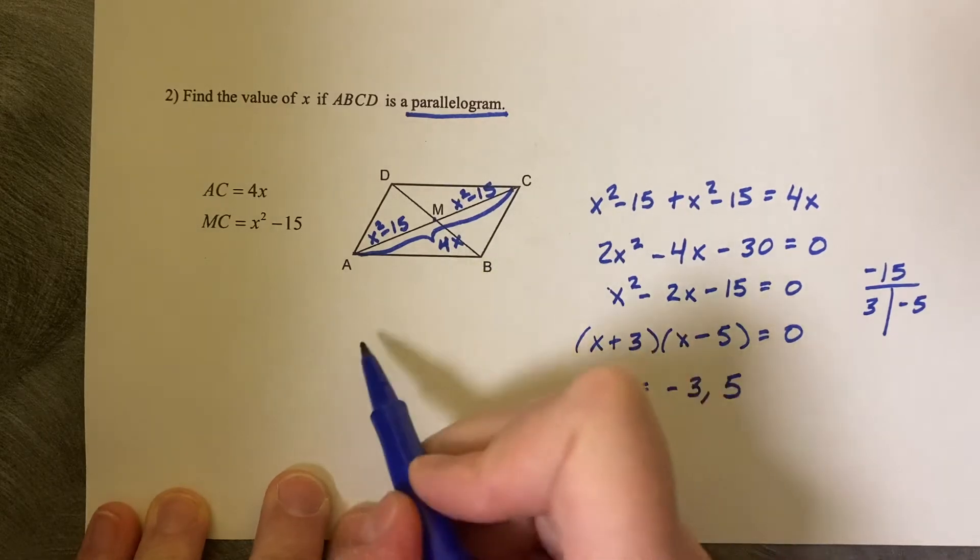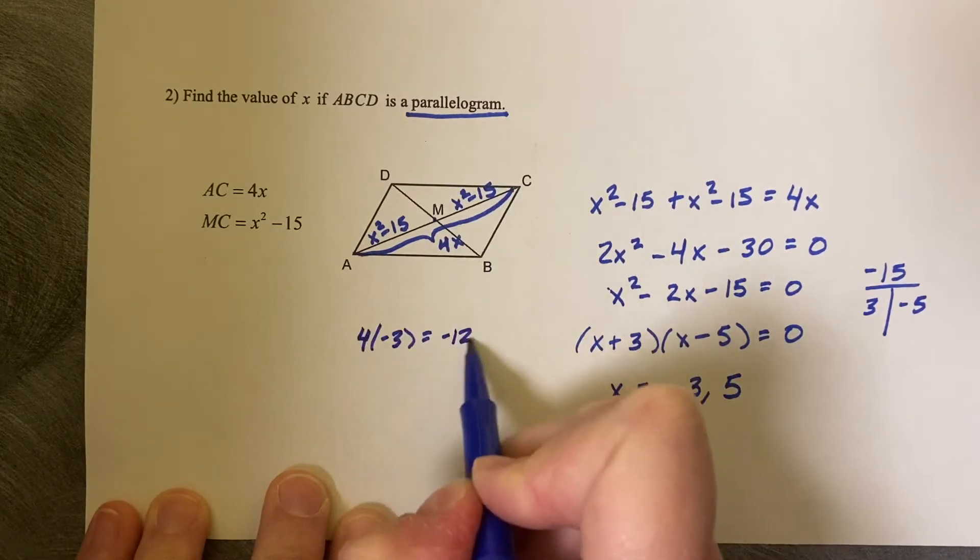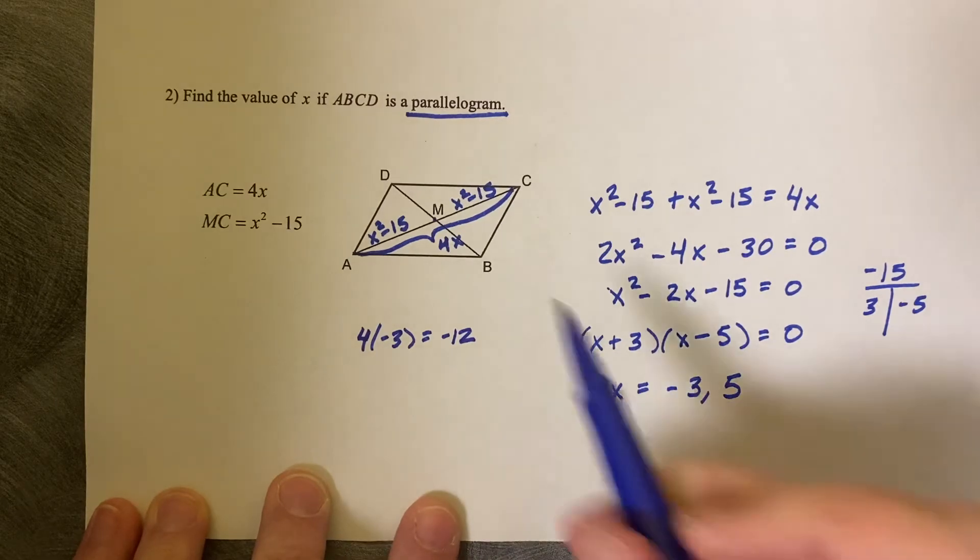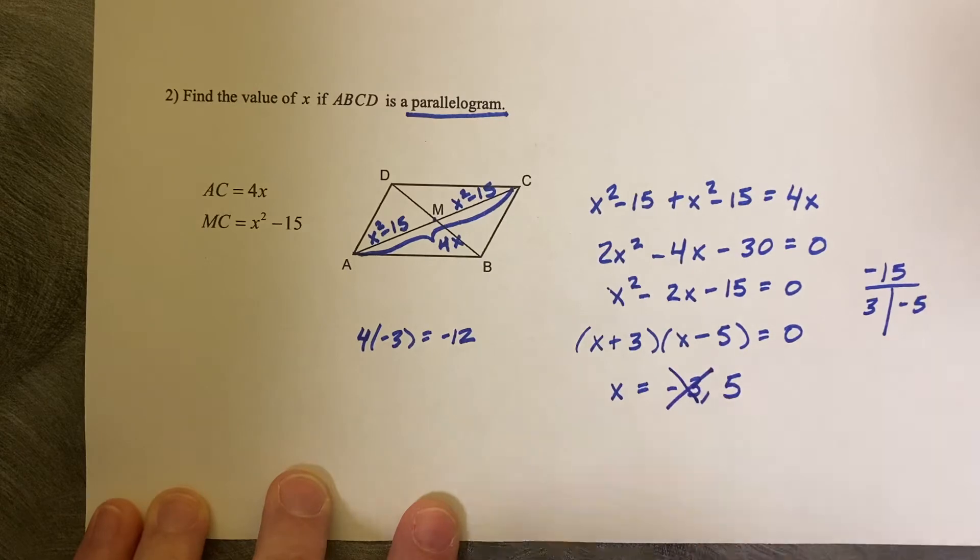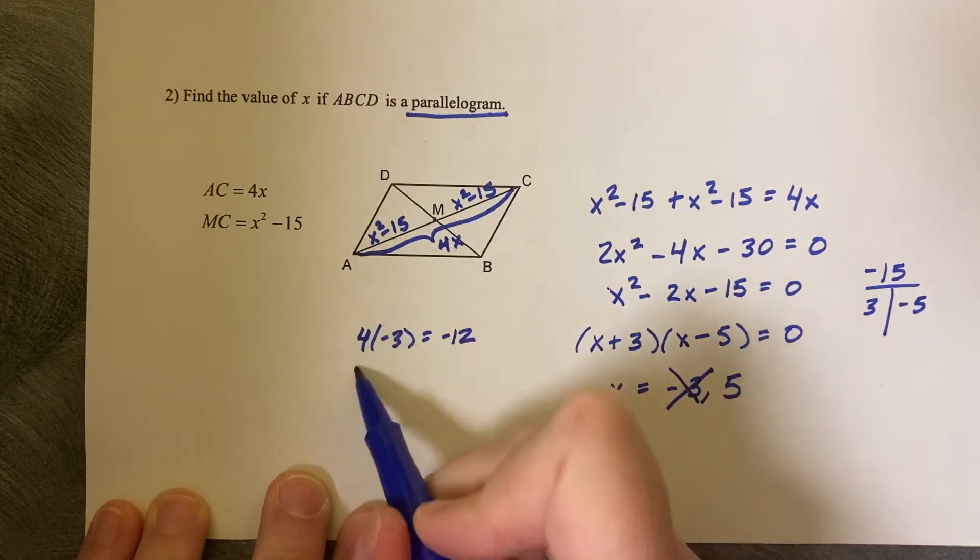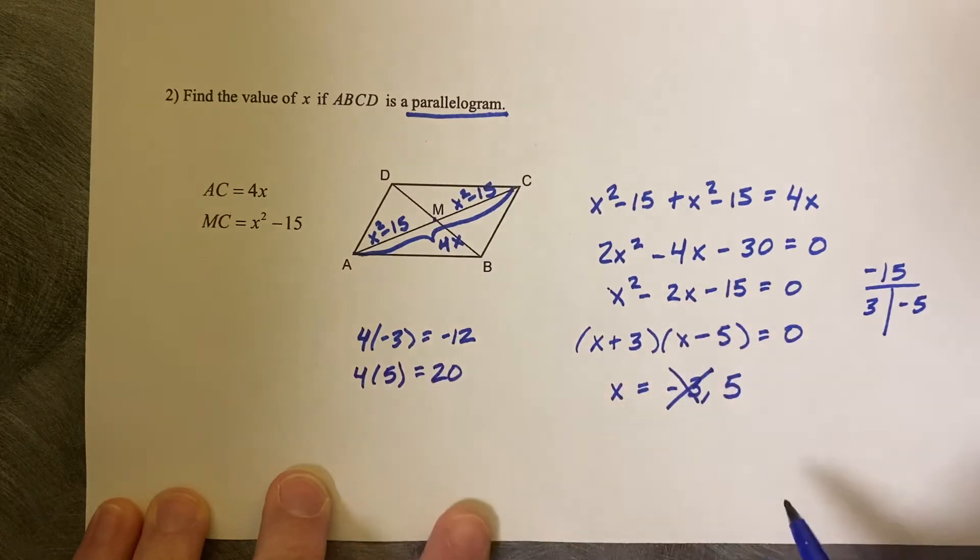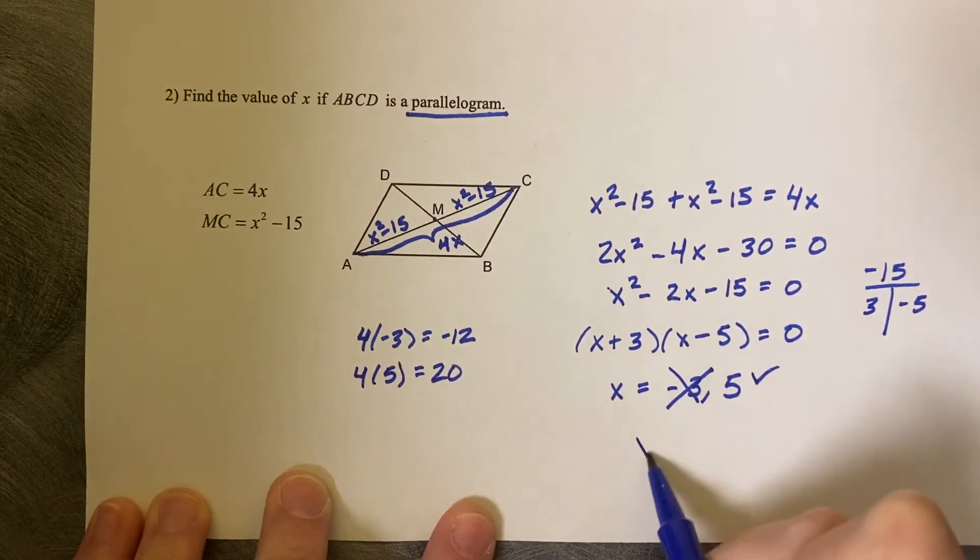4 times negative 3 is negative 12. Does that make sense for the length of AC? No, that does not make sense. But does 5 make sense? 4 times 5 is 20. So yes, X equals 5 is the true solution.